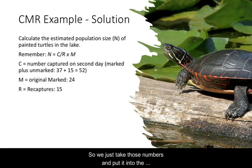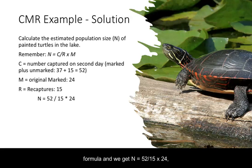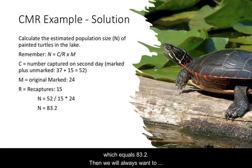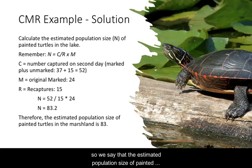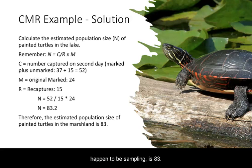We take those numbers and put them into the formula: N equals 52 divided by 15, times 24, which equals 83.2. We always want a concluding statement so the answer is clear. The estimated population size of painted turtles in the lake is 83.